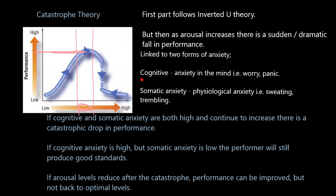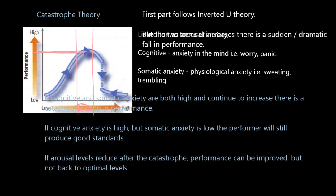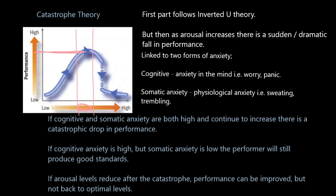This is linked to cognitive and somatic anxiety. Cognitive is to do with the brain — anxiety in the mind: worry, panic, fear. Somatic refers to the body or your physiology — physiological anxiety: sweating, trembling, shaking, the signs that you are physically nervous. The general principle is this: if you have high cognitive and somatic anxiety levels — anxious both psychologically and physiologically — you are going to have a catastrophic drop in performance. You are going to see a massive drop in performance because you have become over-aroused, with high cognitive and somatic anxiety leading to that over-arousal.